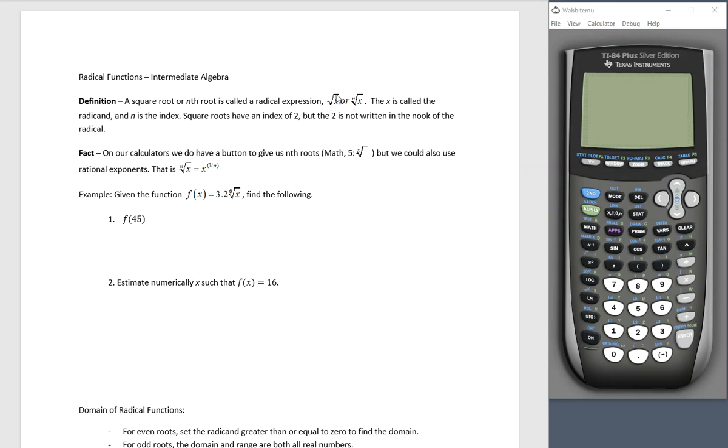A square root, or nth root, is called a radical expression. If we have a square root box with an x under there, or maybe there's an n or a number inside that little nook, the x is called the radicand, the thing under the radical.